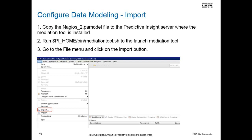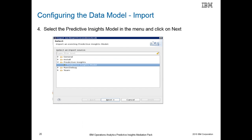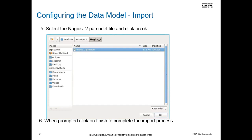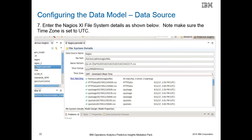The next step is to configure the data modeling by importing the model file into the Predictive Insights server. First, copy the PA model file to the Predictive Insights server where the mediation tool is installed. Then change to the $PI_HOME bin directory to launch the mediation tool, go to the file pull-down menu, and click on the import button as shown on the slide. Select the Predictive Insights model in the menu and click on Next. Select the Nagios XI PA model file and click OK. When prompted, click Finish to complete the import process. To configure the data source, enter the data source name as Nagios and the file path of the Nagios CSV files. You must also make sure the time zone is set to UTC.